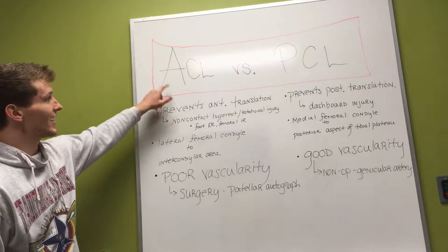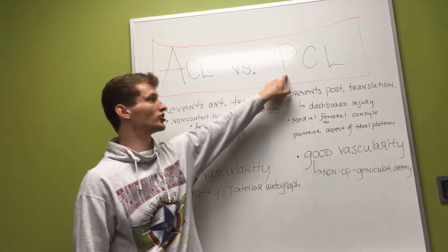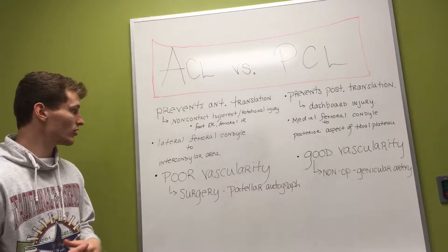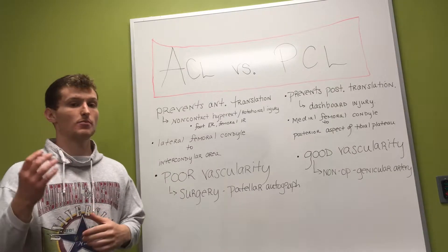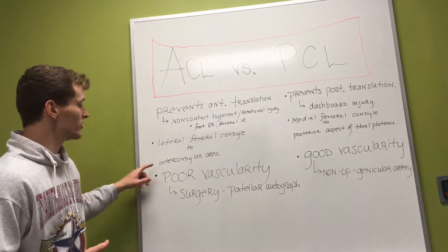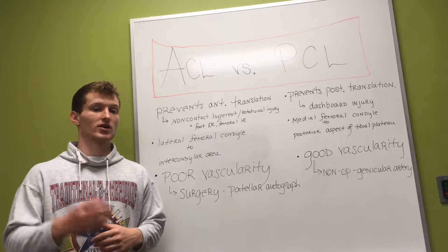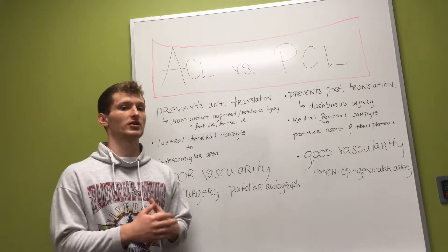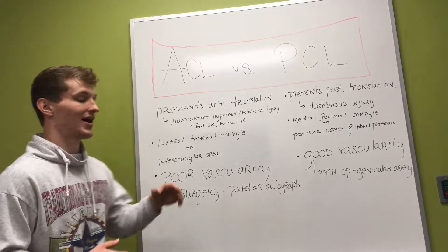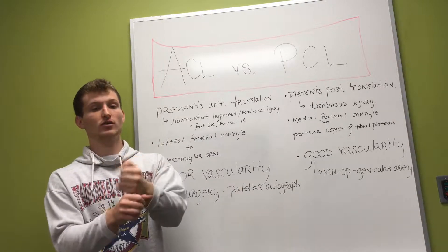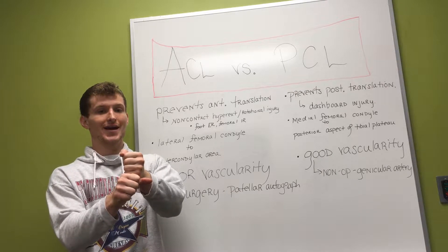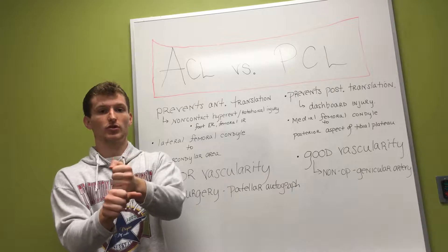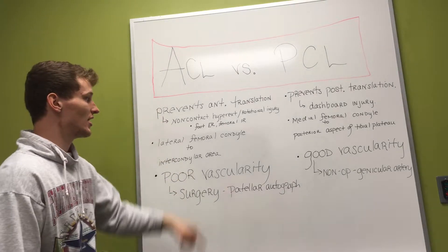So what we're going to talk about is the anterior cruciate ligament, your ACL, versus your posterior cruciate ligament, your PCL. With the ACL, it originates on the lateral femoral condyle — the lateral condyle at the base of our thigh bone — to the intercondylar area, meaning it runs from that lateral condyle on the femur towards the intercondylar area right in between our menisci on the top of our tibia. So we know it inserts anteriorly and it prevents our tibia from traveling anteriorly on our femur — it prevents anterior translation of the tibia on the femur.